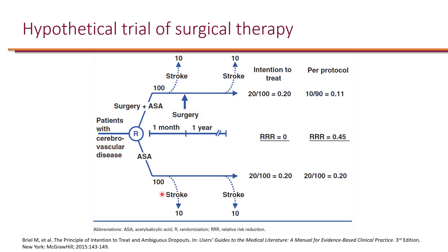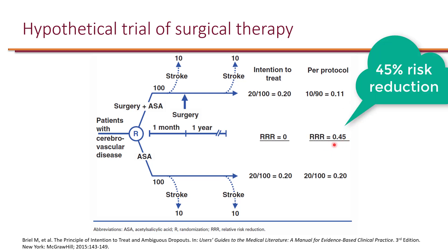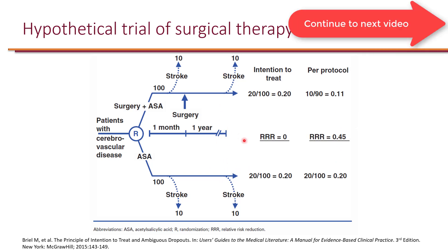Nothing changed in the control group because everybody received aspirin, so it's still 20%. The relative risk is 0.11 divided by 0.2, which is 0.55, and the relative risk reduction is 1 minus 0.55, which is 0.45. This shows a huge apparent benefit of surgical intervention in the per-protocol analysis, compared to no difference in the intention-to-treat analysis — a huge deviation from the truth. This is why it's important to consider intention-to-treat analysis in randomized clinical trials.